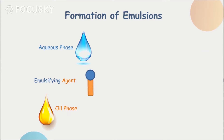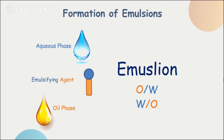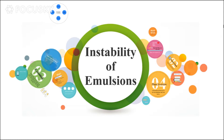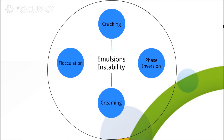In brief, emulsions are composed of water and oil. One is dispersed as droplets throughout the other with the help of an emulsifying agent. They are inherently unstable because oil and water are not compatible, but in order to prevent that from happening we use the emulsifying agent. Still, we might experience failure in keeping the emulsion system together, and that can be in the form of cracking, flocculation, creaming, or phase inversion — and these are the instabilities that emulsions might have.